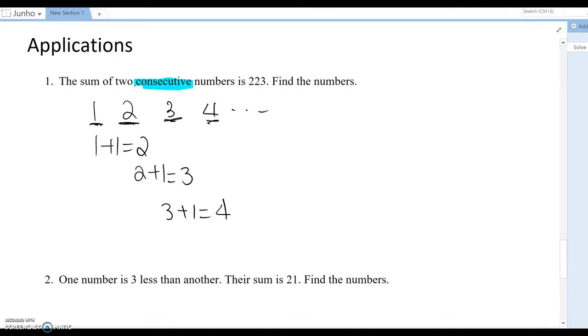If we set up one number as x, then the other one must be x plus one. Like we just confirmed, two equals one plus one, three equals two plus one, four equals three plus one. So if the first one is x, then the next one must be x plus one.